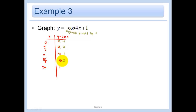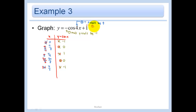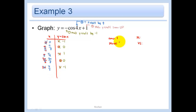That right there took care of my reflection over the x-axis. The second thing I'm going to do is divide the x stuff by 4, so I'm compressing this thing and the period is going to be only 1/4 as much as it used to be. So divide by 4: we get 0, π/8, π/4, 3π/8, π/2. And then the last thing we're going to do is our vertical shift — shift the y stuff 1 unit up.